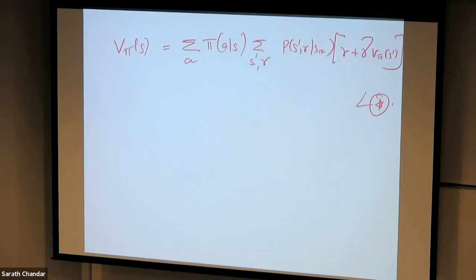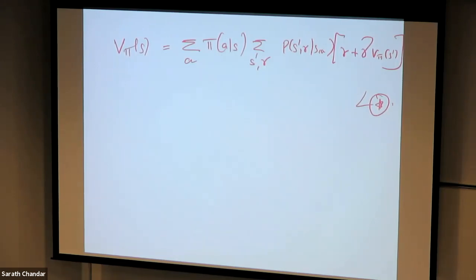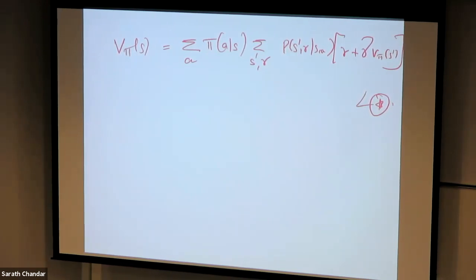The existence and uniqueness of this value function is guaranteed as long as gamma is less than 1, or eventual termination is guaranteed. If you have access to the dynamics function, this is a system of linear equations: with n states, it's n equations with n unknowns, so the solution is straightforward. However, it is computationally expensive when you have many states, so we will use an iterative solution instead.